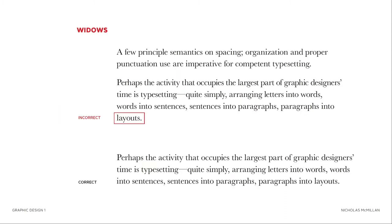As we move into typesetting and working with large bodies of text, we're going to run into problems. One of the problems we need to look out for is what are called widows — single words on the last line of a paragraph. We want to try to solve these and get rid of them. The correct version adjusts the tracking to bump some words up, giving a little bit more room on the line and bumping that word up.